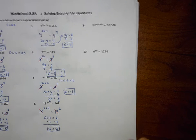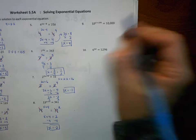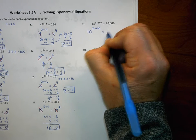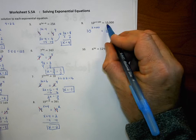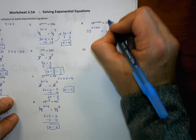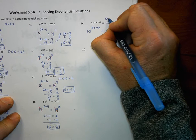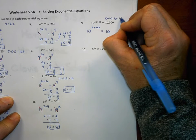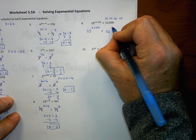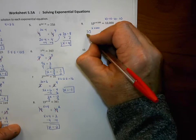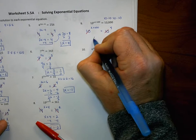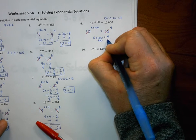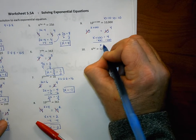Number 9: 10 to the power of x plus 100 is the smaller base side, so I leave that alone and check if 10,000 is a power of 10. 10 times 10 is 100, times 10 is 1,000, times 10 is 10,000. So 10 to the 4th power equals 10,000. The bases cancel, giving x plus 100 equals 4. Subtracting 100 from each side, x equals negative 96.